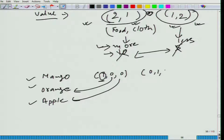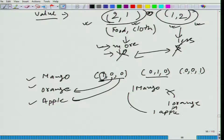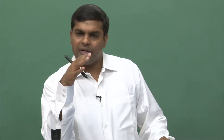So in the second bundle you will have (0,1,0) and in the third you will have (0,0,1) — zero mango, zero orange, and one apple. Now let us say there is a person who likes bundle 1 more than bundle 2. So one mango is preferred over one orange, one orange is preferred over one apple, but one apple is preferred over one mango. So mango is better than orange, orange is better than apple, but apple is better than mango — it happens to us.